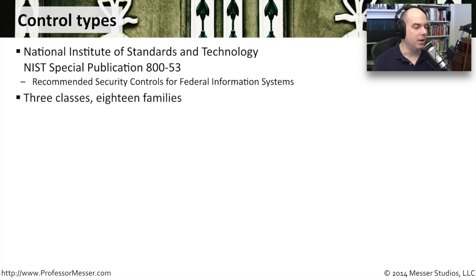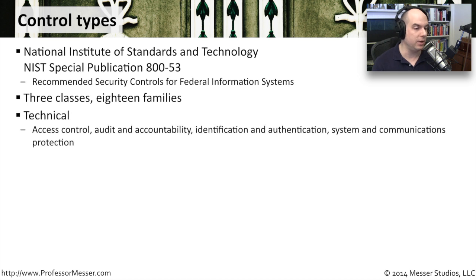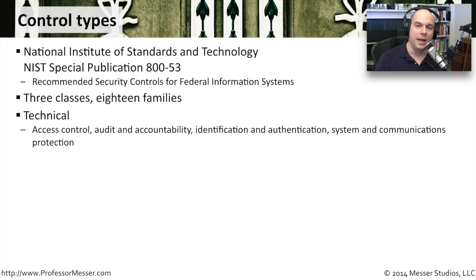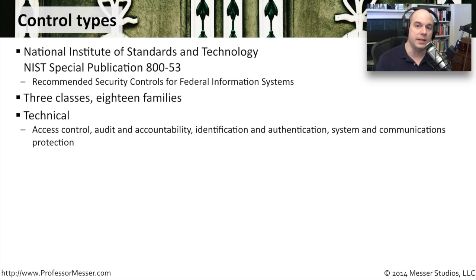Inside of this document are what they call three classes and 18 different families categorized within those three classes. The first class is Technical Control Types. You can think of this as things like access control, how you authenticate onto the different resources on your network or computer, how you protect your systems, how you protect your communications — all of those technical aspects of control.